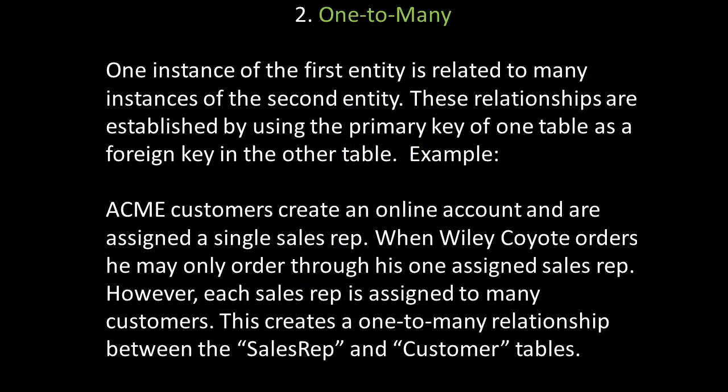The second type of cardinal relationship in a relational database is the one-to-many relationship, where one instance of the first entity is related to many instances of the second entity. These relationships are established by using the primary key of one table as a foreign key in another table. For example, Acme customers are assigned a single sales rep, say Bugs Bunny. Wiley Coyote may only order through his one assigned sales rep, but each sales rep is assigned to many customers, creating a one-to-many relationship between the sales rep and customer tables.